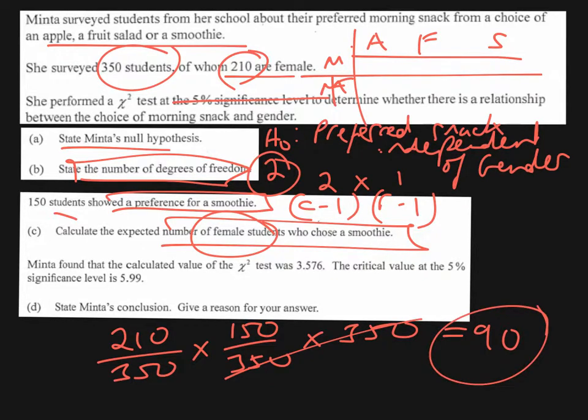In the final part, we're told that the calculated value of the chi-squared test was 3.576, and the critical value is 5.99. Therefore, because our value is less than the critical value, we don't have enough evidence to reject the null hypothesis. Therefore, her conclusion is that preferred snack is independent of gender because the chi-squared test value was less than the critical value.